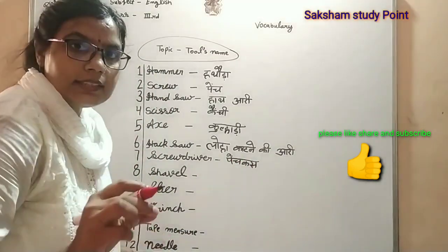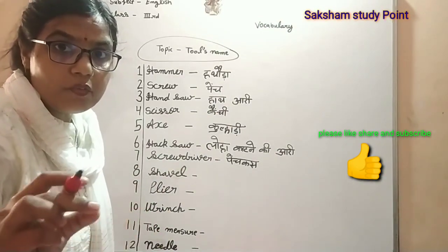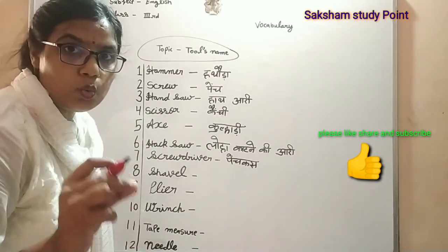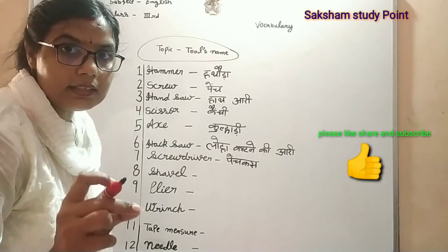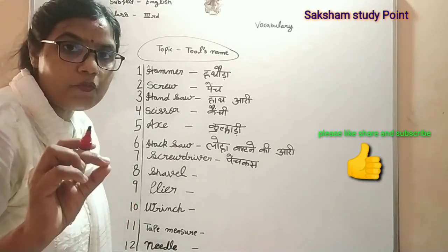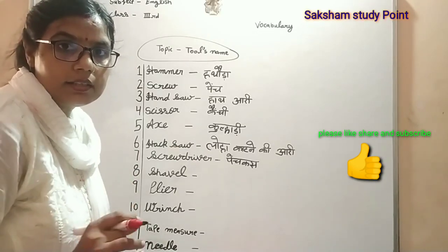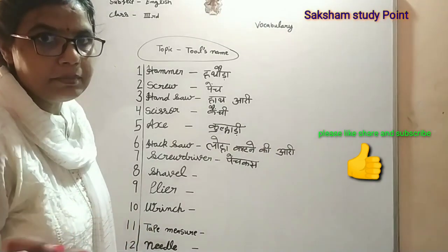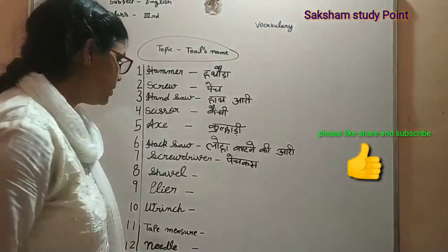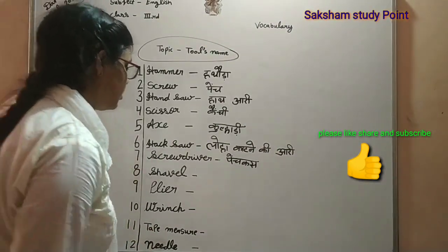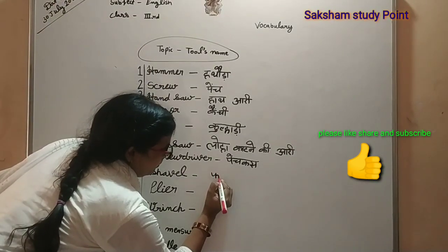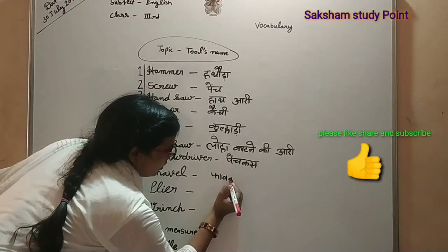S-H-O-V-E-L, shovel. Shovel means hota hai — fawdha. Spade bhi bolte hain — S-P-A-D-E. Spade means favra hota hai.